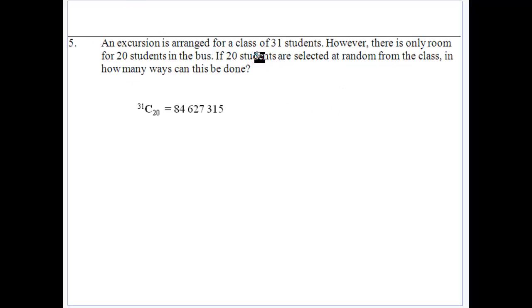An excursion this time has been arranged for 31 students. There's only room for 20 students on the bus. If the 20 students are selected, how many ways can this be done? Well, we're looking for groups of 20 out of 31 total. That can be done 84,627,315 ways. A lot of ways you can get groups of 20 from 31 students.